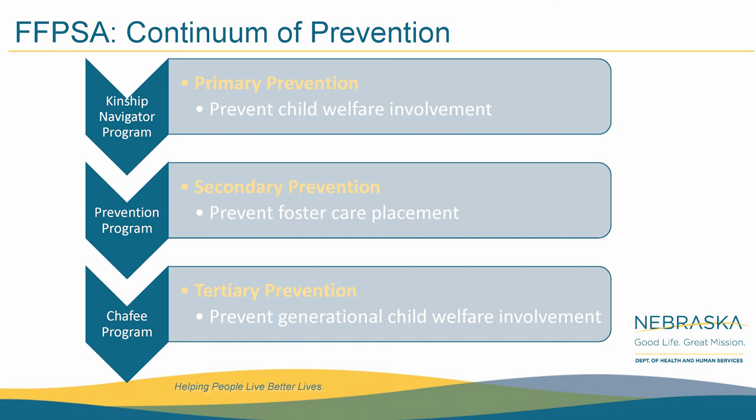The second level is secondary prevention, or simply to prevent foster care placement, which we will go into more detail over the next several slides. The third level is tertiary prevention to prevent generational child welfare involvement. This extends the program to youth who were in foster care at age 14, up to age 23 instead of 21 for the state of Nebraska. Youth may still be eligible for this if they aged out before age 18.